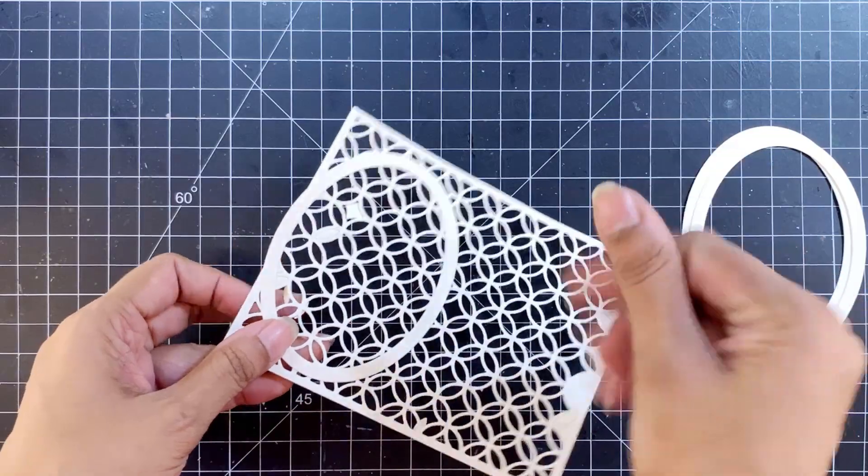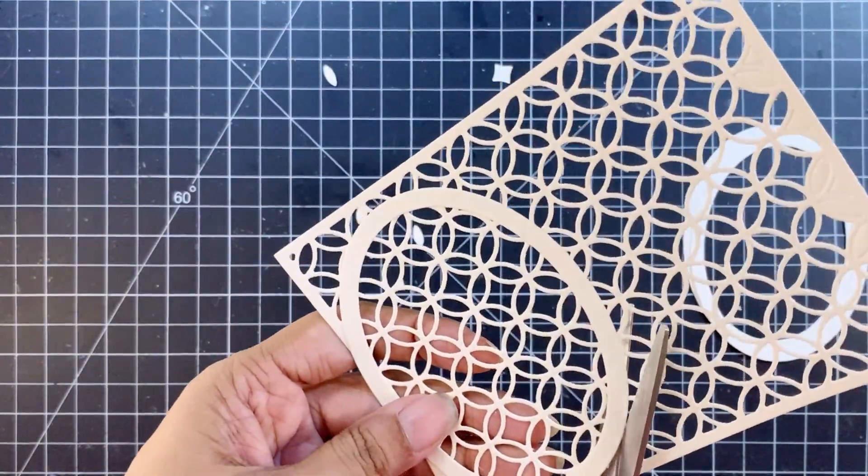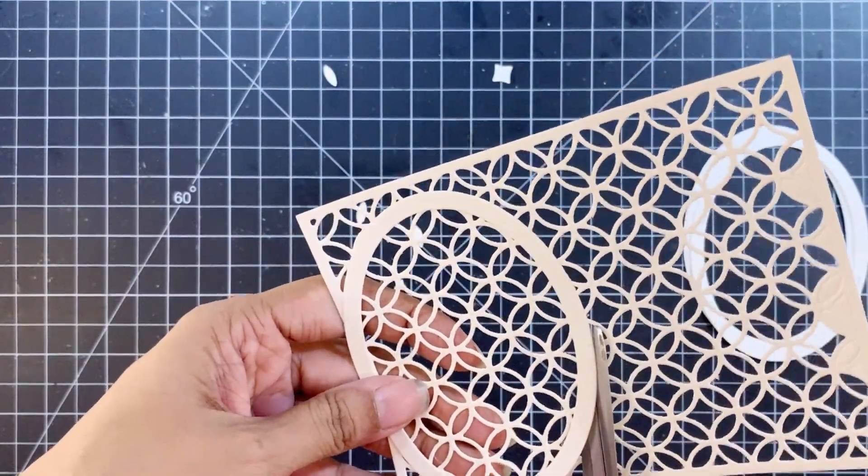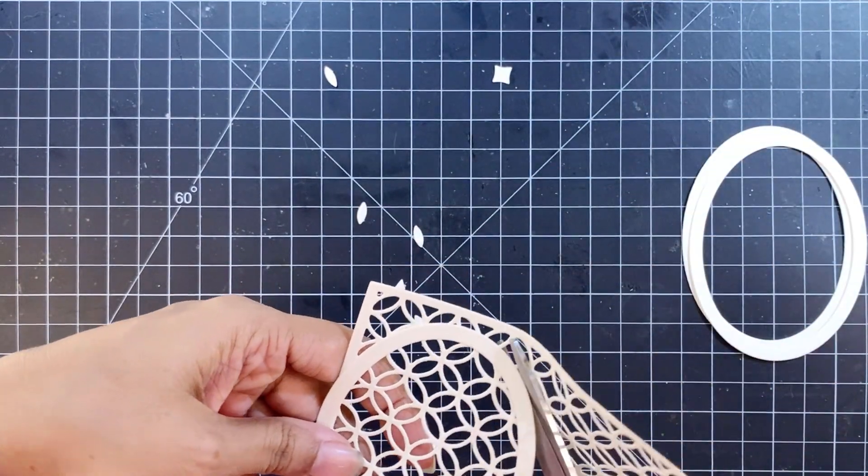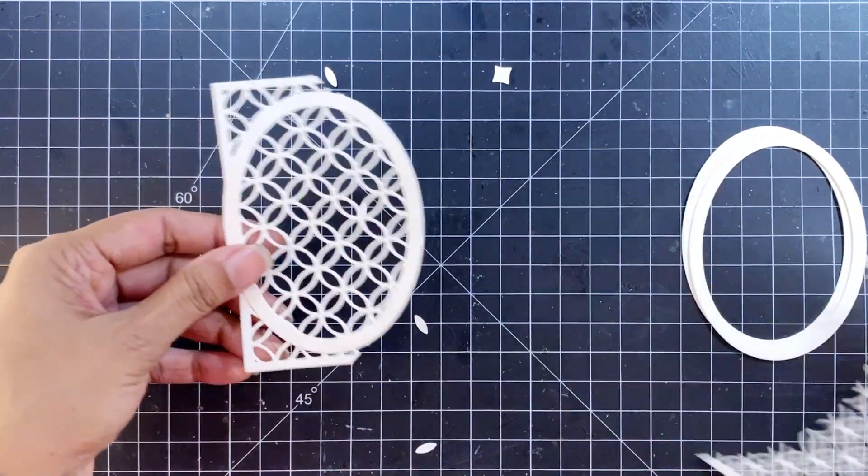And I'll be using the new circle quilt cover die which is an absolutely beautiful intricate cover die and this oval from the create a wreath die set.